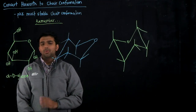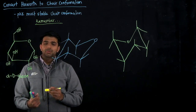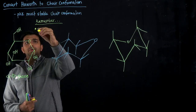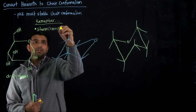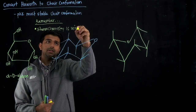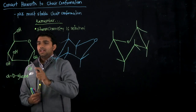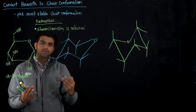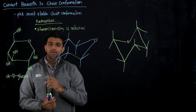The objective of this video is to convert Haworth projections into a chair conformation. The key thing to remember is that stereochemistry is retained among these structures. If something is going up on your Haworth projection, it's also going to be going up on the chair conformation. If something is going down on the Haworth, it's also going down on your chair conformation. That's the biggest mistake students make — putting something going up on the Haworth then down on the chair, which changes the molecule entirely. So make sure that you retain your stereochemistry.